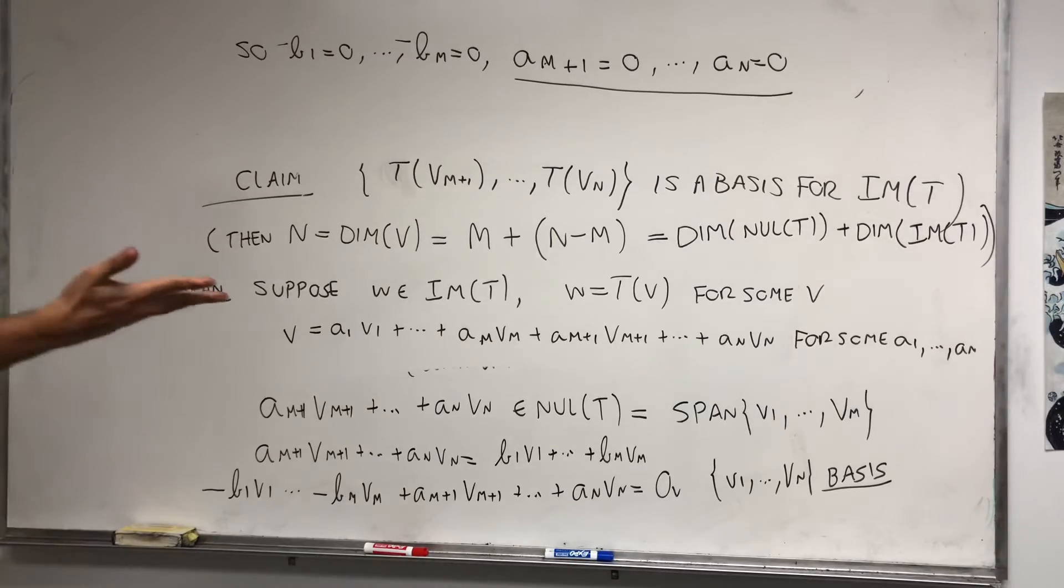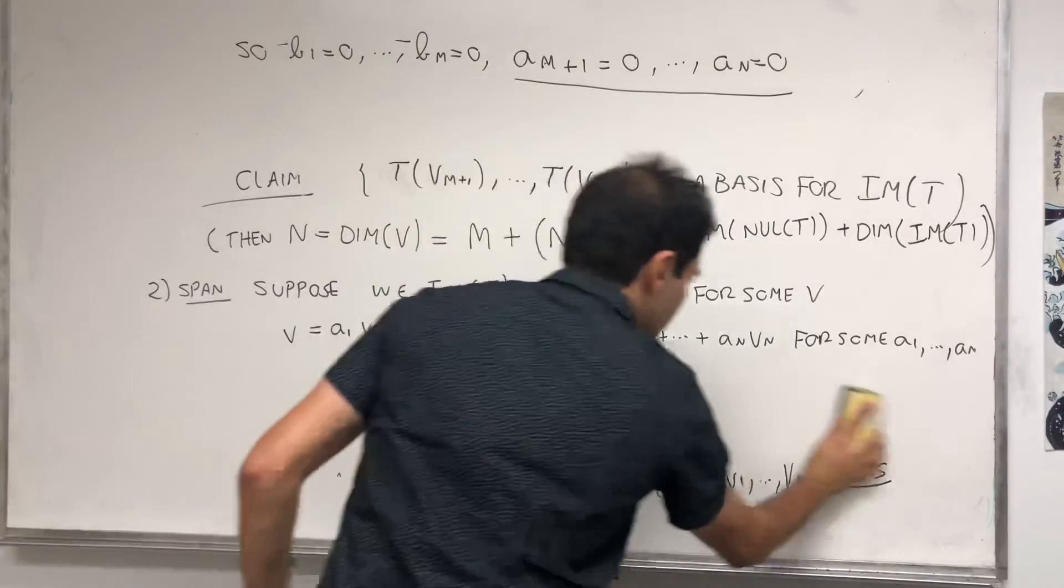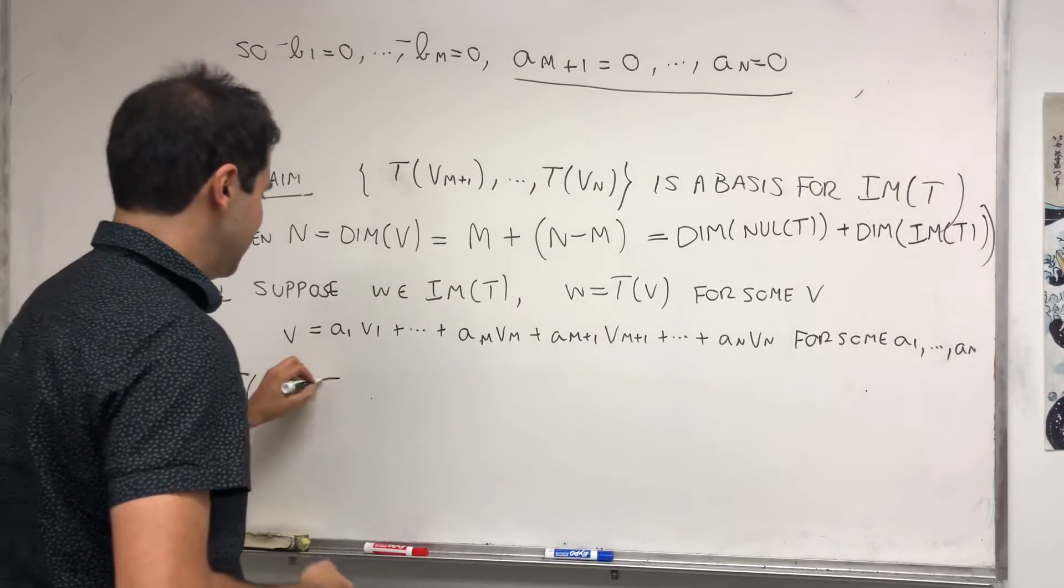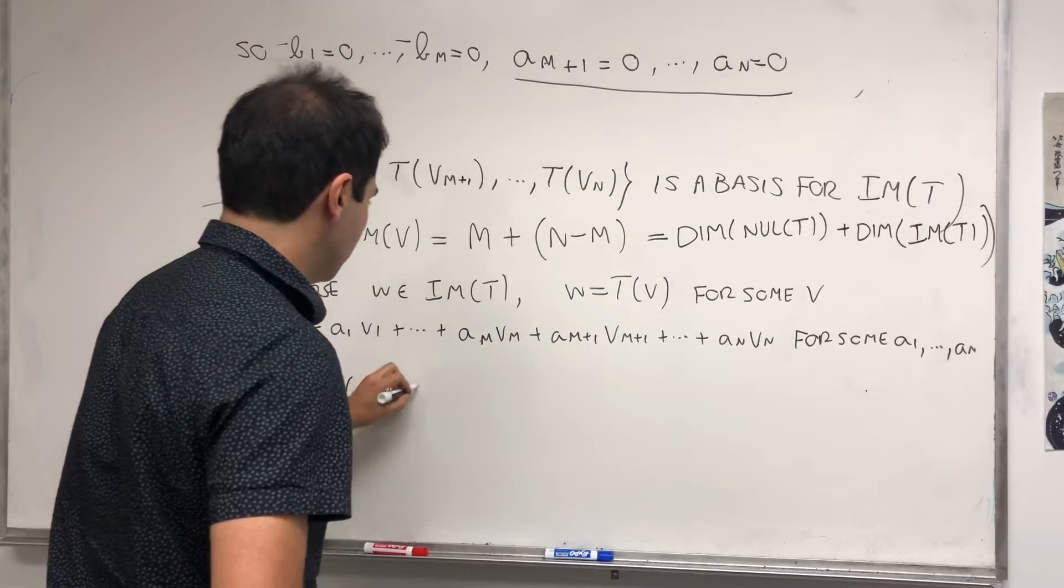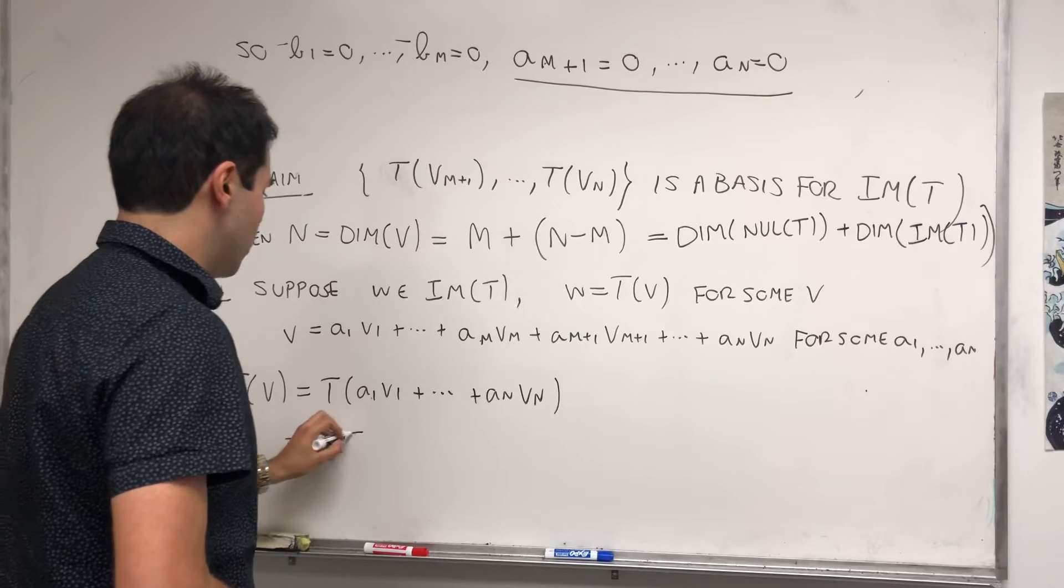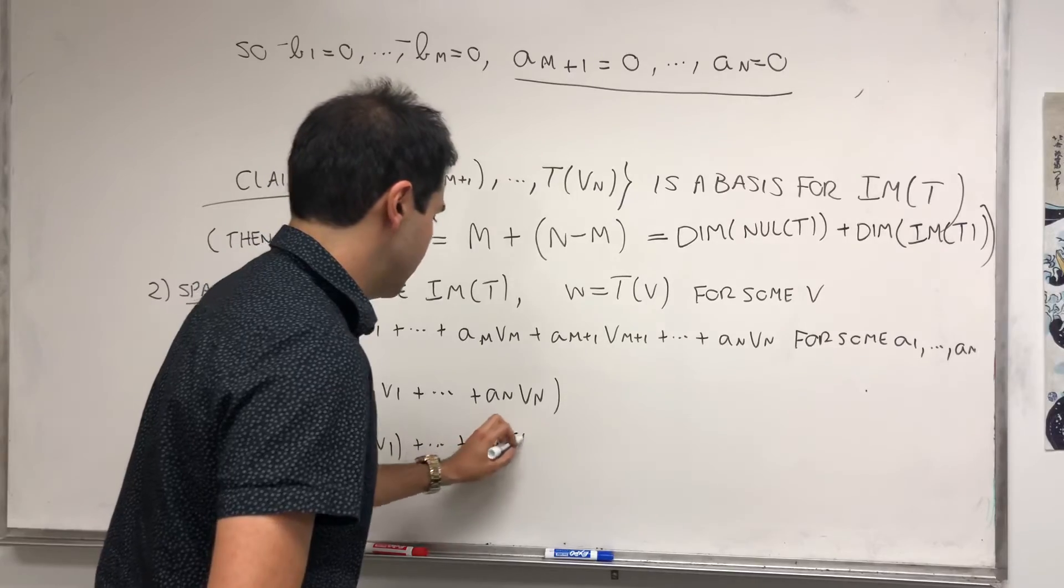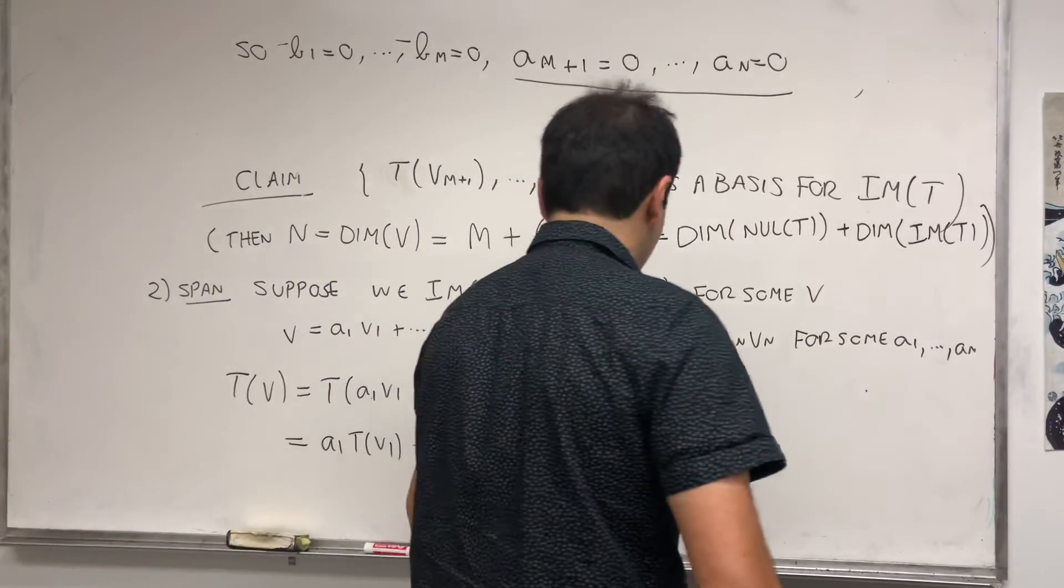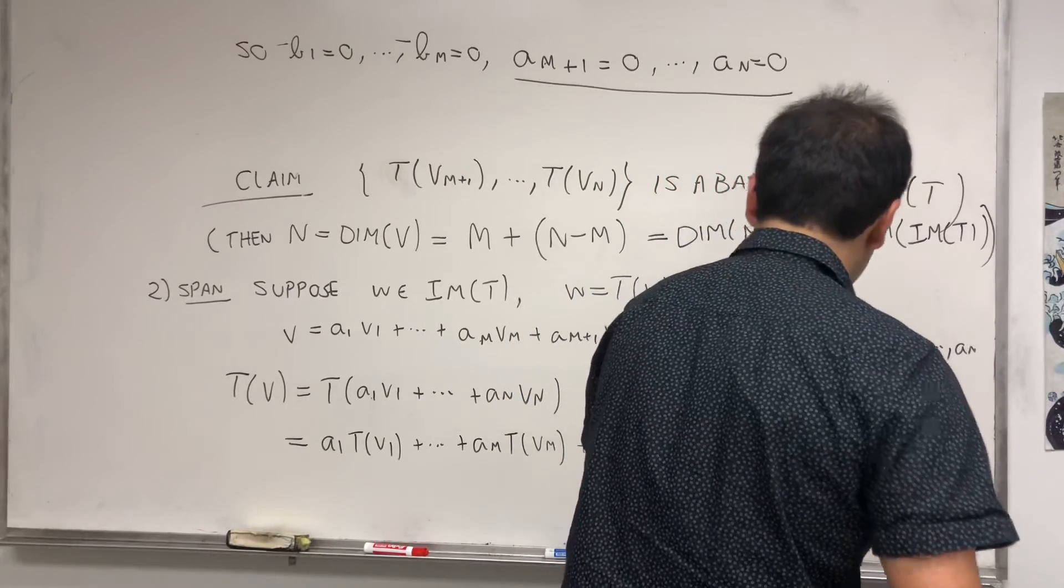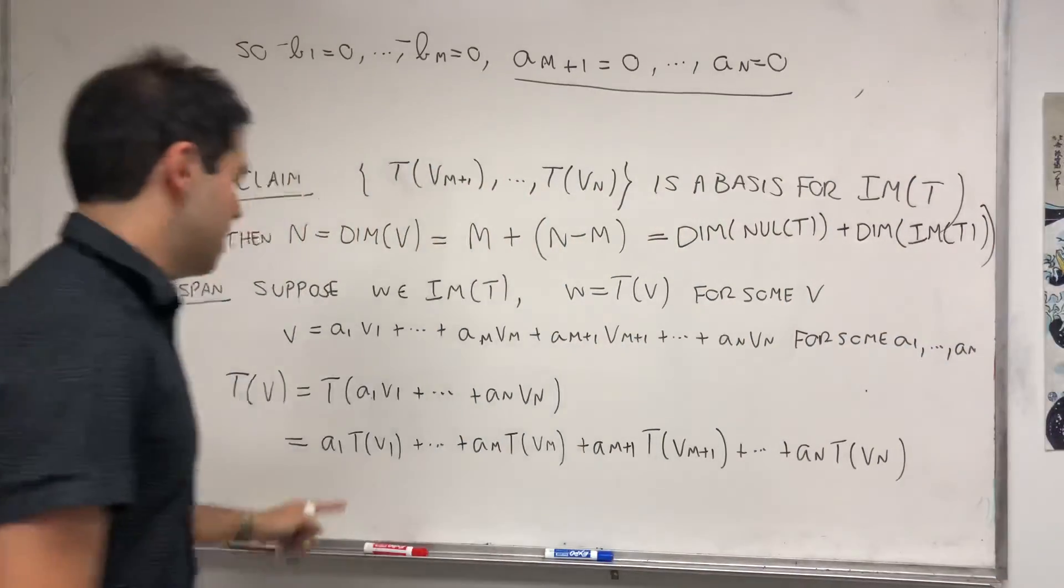But we don't care what V is, we care about W. So let's just apply T to it. So T(V), like you're watching TV, that's T(A1·V1 + ... + Am·Vm) + Am+1·T(Vm+1) + ... + An·T(Vn).